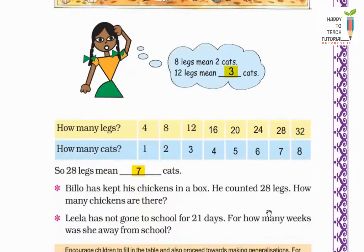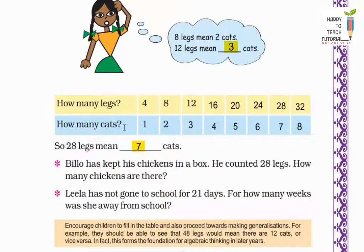Here there is a table given showing how many legs and how many cats. If there are 4 legs, how many cats will there be? 1 cat, because 1 cat has 4 legs. If 8 legs, then 2 cats. If 12 legs, then 3. If 16 legs, then 4 cats. If 20 legs, then 5 cats. If 24 legs, then 6 cats. You can also see it this way - if there are 7 cats, how many legs will there be? 28. If 8 cats, how many legs? 32. You can understand it this way also. So 28 legs means how many cats? You can see here also, 7 cats.